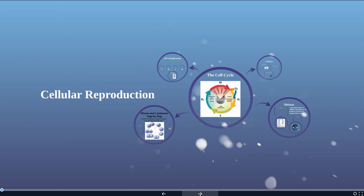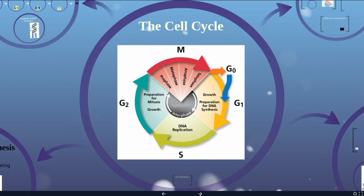For this lecture, we're going to talk about cellular reproduction, specifically mitosis and meiosis. We want to start with looking at the overall cell cycle. The cell cycle is just the life cycle of the cell. This is where a cell is born and begins its life, and it's going to go all the way around through its life cycle.